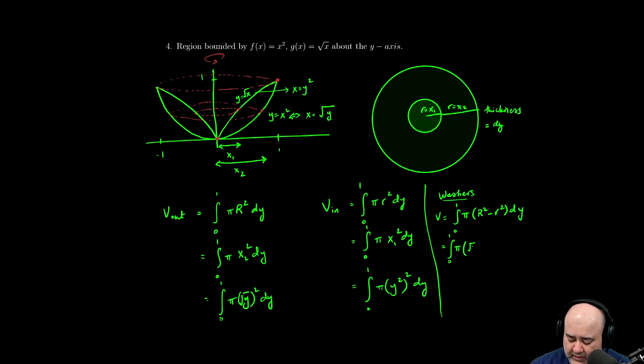So I'm going to square root y minus the inner radius squared. The inner radius will be the distance from here to here, which is given by y squared.